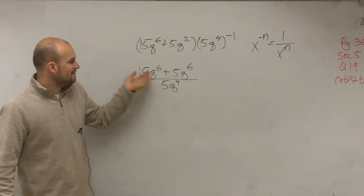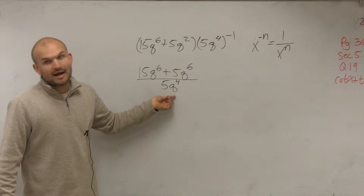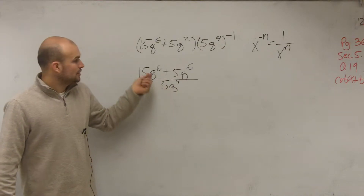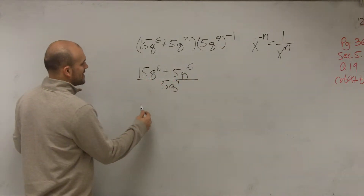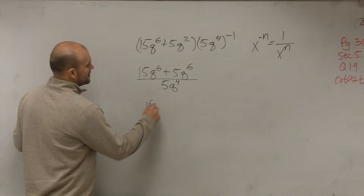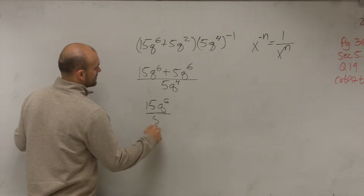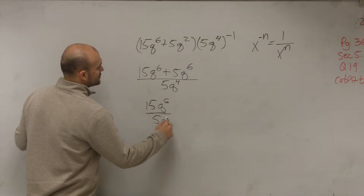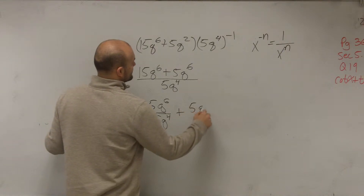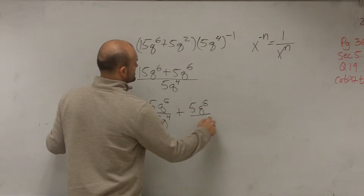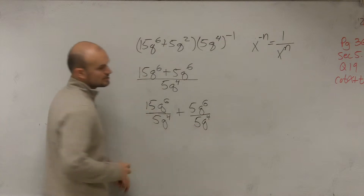When you have a term being divided by a monomial, you divide both terms by your monomial. So in reality, you have 15q to the sixth divided by 5q to the fourth, plus 5q squared divided by 5q to the fourth.